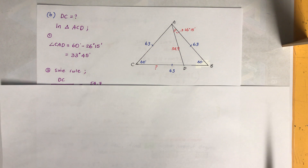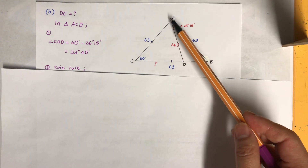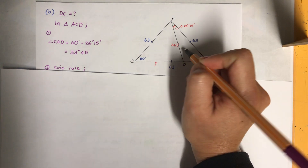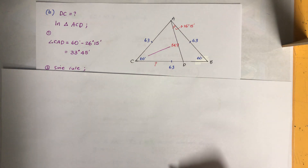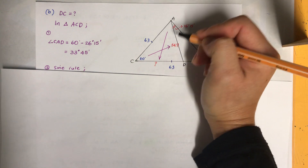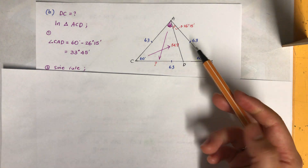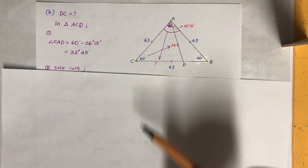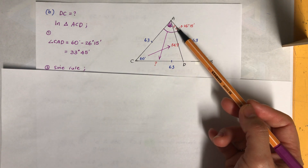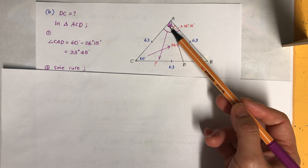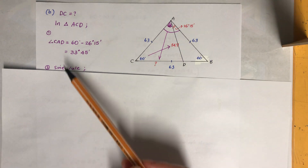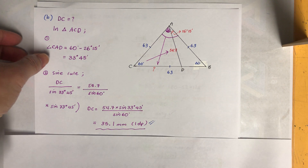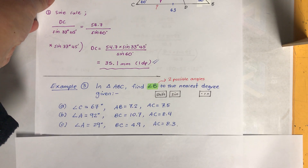Now for DC: re-sketch triangle ACD. Using the result AD = 54.7 mm, we need to find angle CAD. Since the full angle at A is 60° and angle DAB = 26°15', angle CAD = 60° − 26°15'. Then apply the sine rule in triangle ACD to find DC.